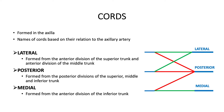The next part, and probably the most important part of the brachial plexus, are known as the cords. They are formed in the axilla, and the names of the cords are based on their relation to the axillary artery. There are three cords in total. The lateral cord is formed from the anterior divisions of the superior and middle trunks, located lateral to the axillary artery. The posterior cord is formed from the posterior divisions of the superior, middle, and inferior trunks, and lies posterior to the axillary artery. The names of the cords correspond to their relation to the axillary artery.